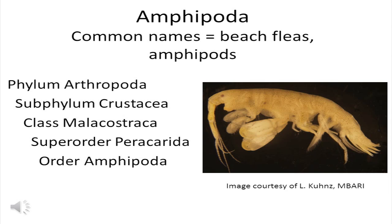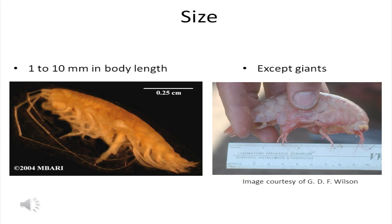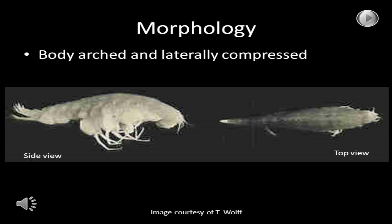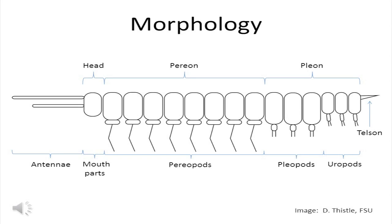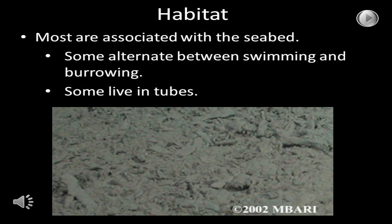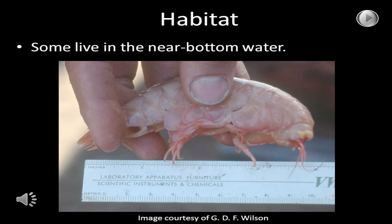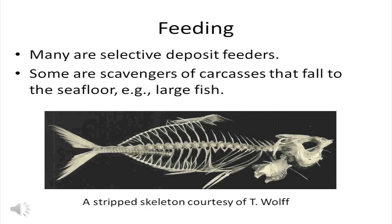The first peracarid group I want to talk about is the Amphipoda — called beach fleas or amphipods; they are in order of the peracarida in the subphylum crustacea. Most amphipods are between 1 and 10 millimeters in body length, although there are some giants — if you look closely at the ruler in the picture on the right, you'll see that this animal is more than 10 centimeters long. The body of amphipods is arched in lateral view and laterally compressed. Most amphipods are associated with the seabed; some alternate between swimming and burrowing, some live in tubes, and some live in the near-bottom water. Many amphipods are selective deposit feeders; others are scavengers of carcasses that fall to the seafloor.